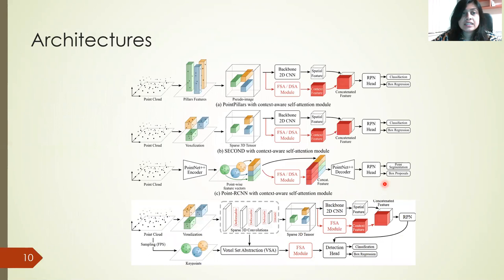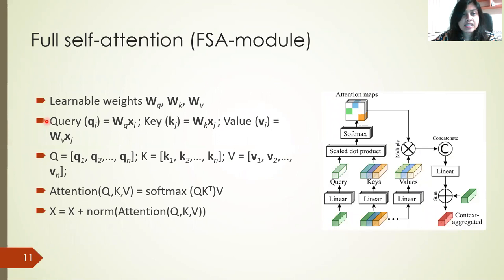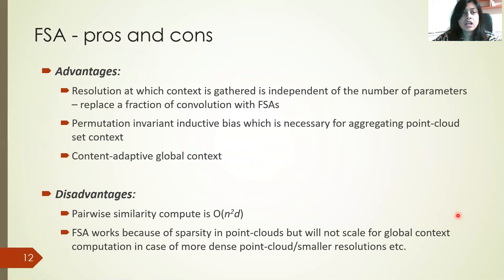These are some architectures. This is our proposed self-attention module, and we insert it into the backbone of Point Pillars, SECOND, Point R-CNN, and PV-RCNN. This is the full self-attention module that we use, which was proposed by Vaswani et al. We use this to compute the context aggregated feature for every node, which represents a pillar, a voxel, or a point.